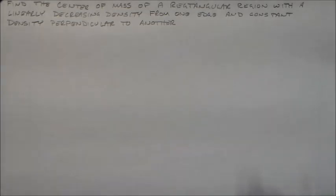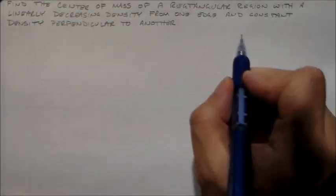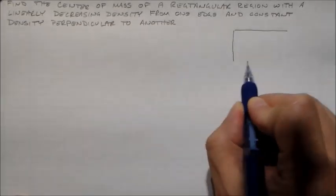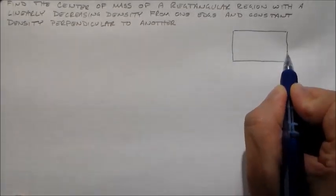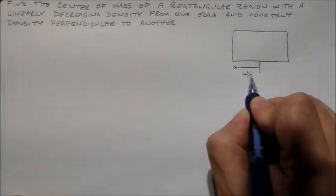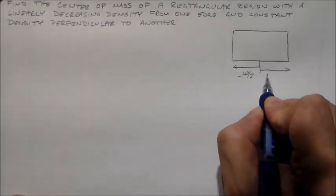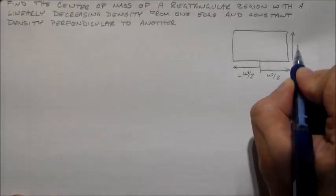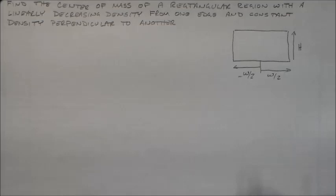Finding the center of mass, which is going to be two components in this case, because this is for a rectangular region. It's going to be for some rectangle like that, with a width w. Let's go from the edge here, minus w over two to w over two, with a height up here of h.